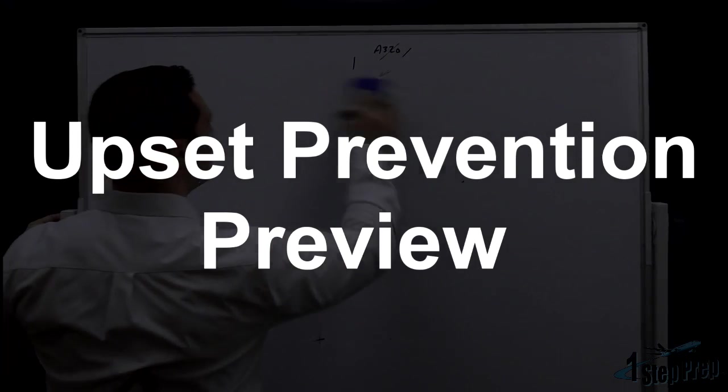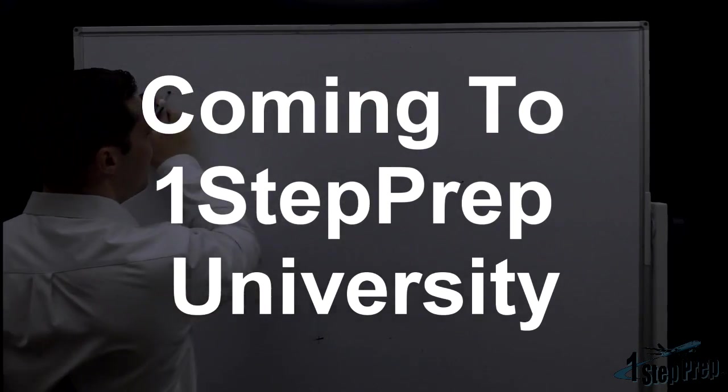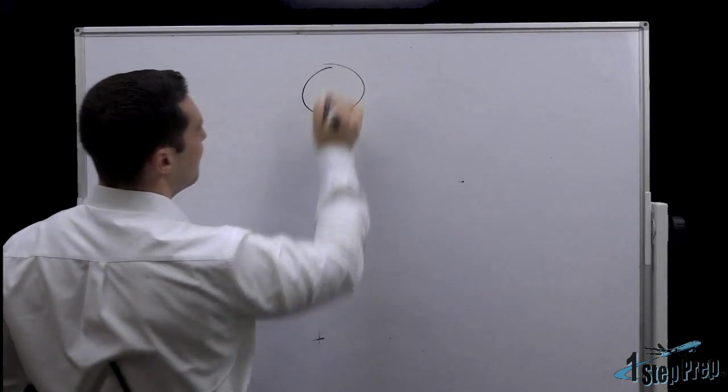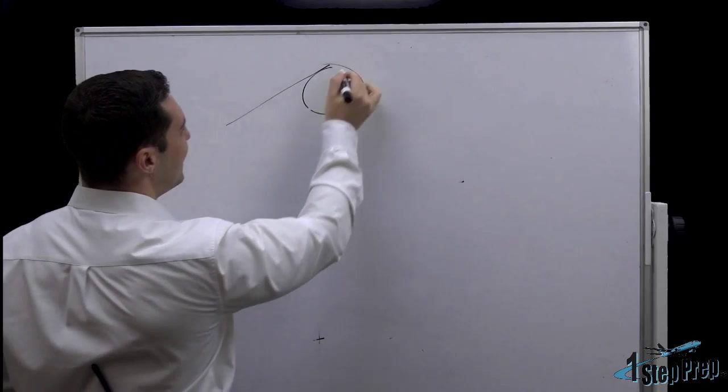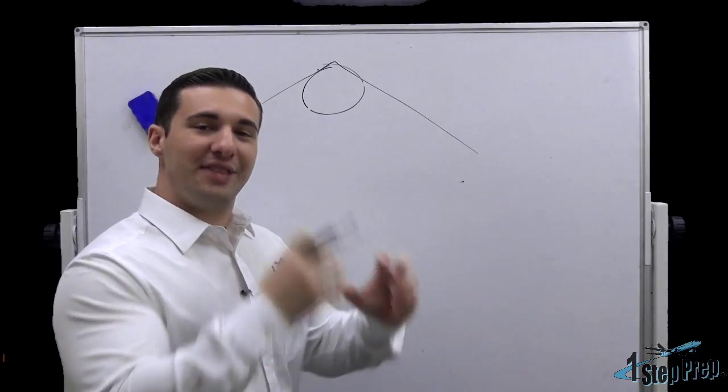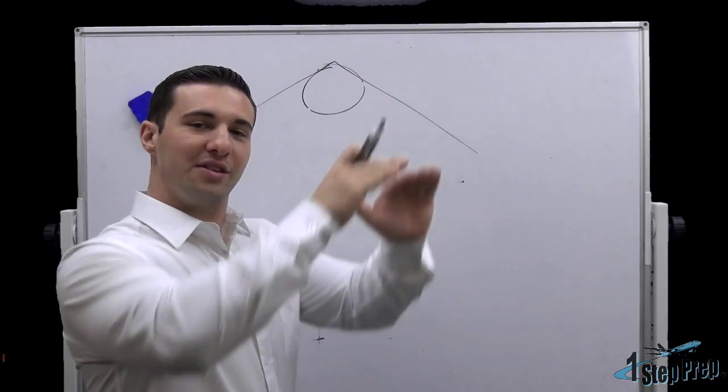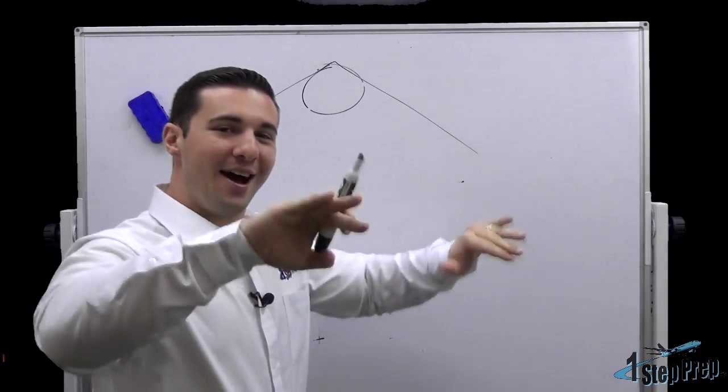There's different ways that we can also control stability by simply controlling the dihedral. Now, I'm going to exaggerate the dihedral and the anhedral. You see me drawing here is anhedral. This is literally where the wings sweep down, not up.